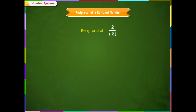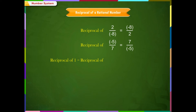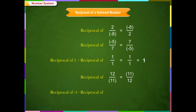Reciprocal of 2/(-8) is equal to (-8)/2. Reciprocal of (-5)/7 is equal to 7/(-5). Reciprocal of 1 is equal to 1/1, which equals 1. Reciprocal of 12/11 is equal to 11/12. Reciprocal of (-1) is equal to 1/(-1), which equals (-1).